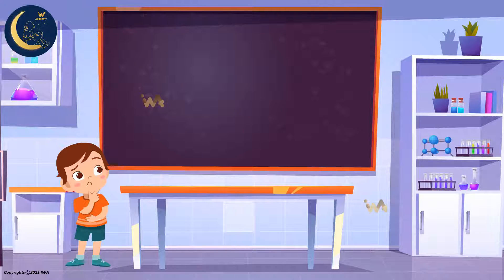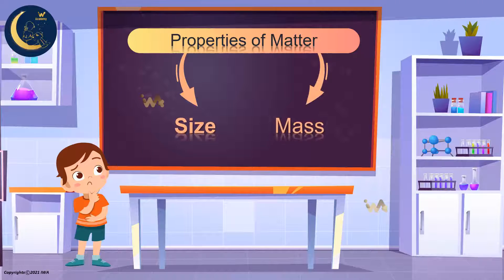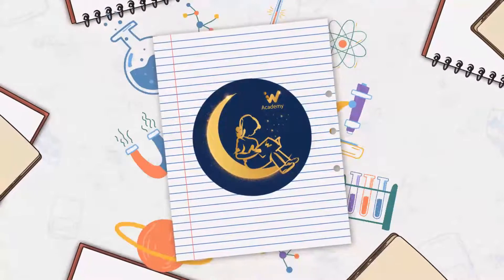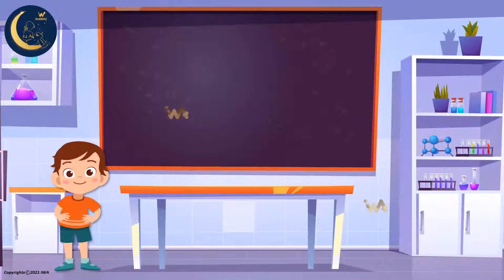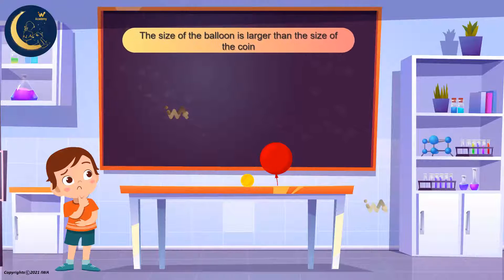So, my friends, the properties of matter are size and mass. Now, I need your help. Here we have a few materials: a balloon filled with air, and a coin. Which of these is larger in size? The balloon has a larger size than the coin.